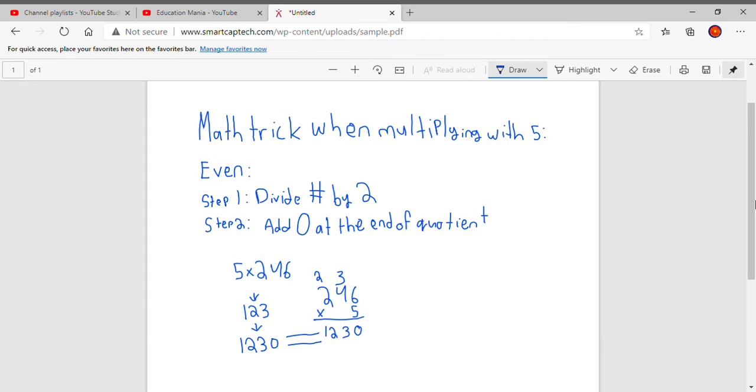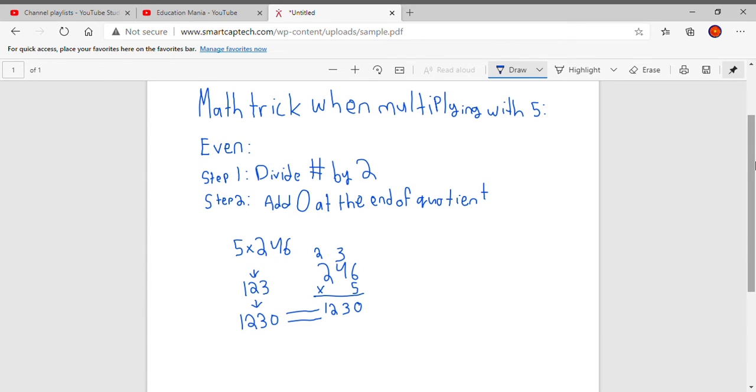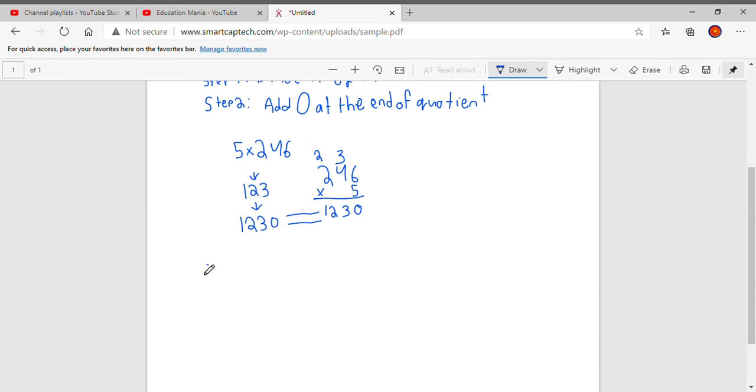Now the second possibility when you are multiplying a number with 5 is if the number is odd. So this one has the exact same steps, except you have to first for step one, you have to subtract one. And the last difference is for when you get to the third step, instead of adding a zero at the end, you add a five.